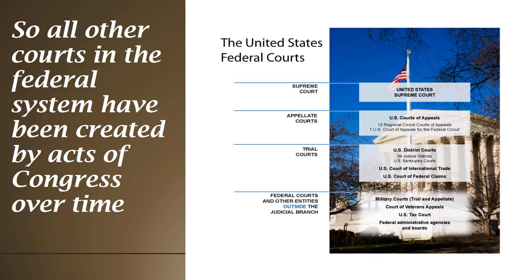On the federal side, the trial courts are referred to as US district courts. At the original jurisdiction level, courts decide what are called questions of fact — they actually hear the facts of the case, determine which facts are applicable, hear evidence, and hear from witnesses.